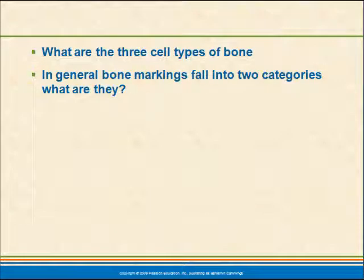A couple of key questions from this section: What are the three cell types? And bone markings fall into two general categories — what are they? Within those categories, be able to name the different bony structures.